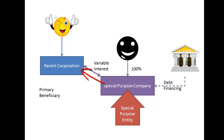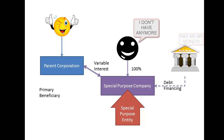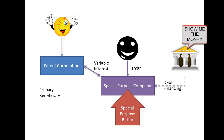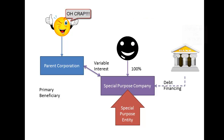The net effect to the bottom line might be negligible if all goes as planned. But as experience has shown in the case of Enron and later Bear Stearns, when things go wrong, it can be catastrophic for the parent to meet the obligations of the special purpose entity.